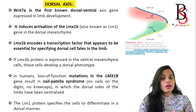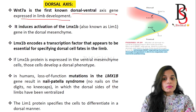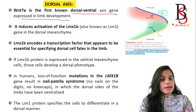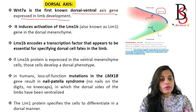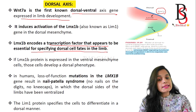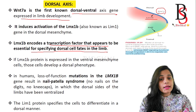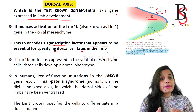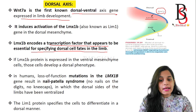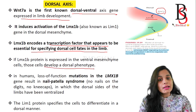Now, the generation of the dorsal limb axis in tetrapods: Wnt7a is the first known dorsal-ventral axis gene expressed in limb development. It is expressed in the dorsal ectodermal region, and then it induces the expression of the Lim1 gene in the dorsal mesenchymal region. The Lim1 gene encodes a transcription factor that appears to be essential for specifying dorsal cell fate in the limb. If Lim1 protein is expressed in ventral mesenchyme instead of dorsal mesenchyme, those cells develop a dorsal phenotype.